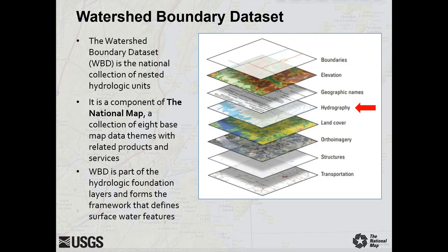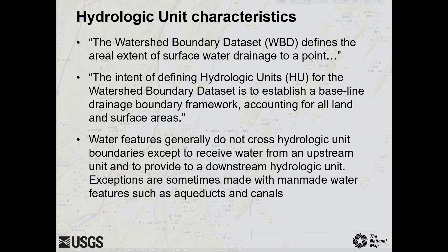These hydrologic units form the framework upon which surface water features are organized. The Watershed Boundary Dataset defines the areal extent of all or part of the surface water drainage to a point on a stream, and may represent all or only part of the total drainage area to that point. Water features generally do not cross hydrologic unit boundaries except to receive flow from an upstream unit and to provide flow to a downstream hydrologic unit.